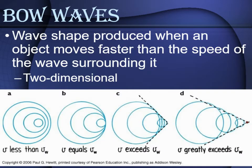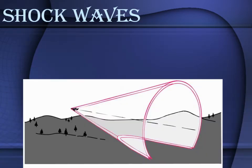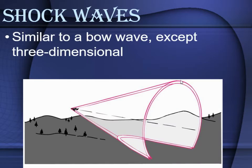Bow waves occur when an object moves faster than the speed of the waves surrounding it. This is a two-dimensional wave. So if something is moving two-dimensionally extremely fast compared to its waves, it will create a bow wave. In the diagram, A represents when the object is slower than its bow wave, and D is when it gets faster than the surrounding waves.